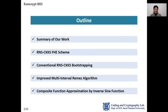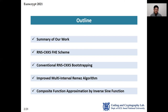Here is the outline of our talk. Starting with the summary of our work, we will explain the RNS-CKKS homomorphic encryption scheme and its bootstrapping, which are mainly concerned in our work. Then we will suggest the main problem in RNS-CKKS bootstrapping, followed by two new techniques: Improved Multi-Interval Remez Algorithm and Composite Function Approximation by Inverse Sign Function.